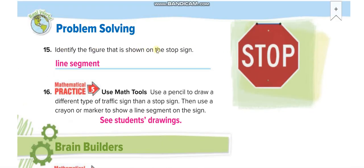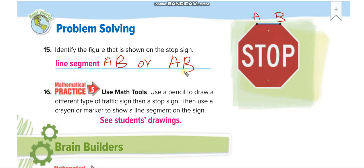Identify the figure shown on the top sign. The figure has two endpoints and no arrows, so it is a line segment. They didn't give us a name, so let's name the first point A and the second point B — it is Line Segment AB, or AB with a small line segment above it.